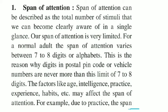The first aspect is span of attention. Span means duration — we need to know what the duration of attention is for human beings. Span of attention can be described as the total number of stimuli that we can become clearly aware of in a single glance. A span of attention is very limited. For a normal adult, the span of attention varies between 7 to 8 digits or 7 to 8 alphabets.